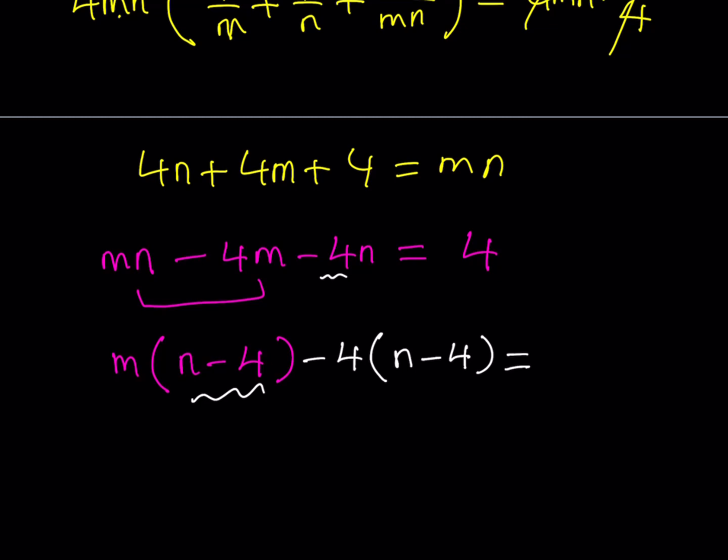Now, what am I going to do next? Well, we do have this expression, which is factorable because we have a common factor, n - 4, and m - 4. So you can write it as (n - 4) multiplied by (m - 4) is equal to 20. We're almost there.